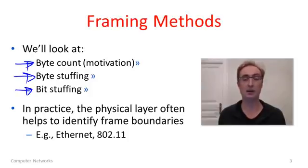And the physical layer often helps the link layer framing by providing signaling about the boundaries. For instance by using physical layer symbols that can't otherwise occur to indicate the start of frames. So we're not looking at those methods.